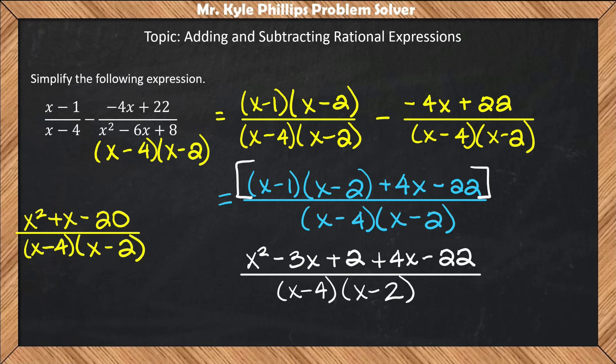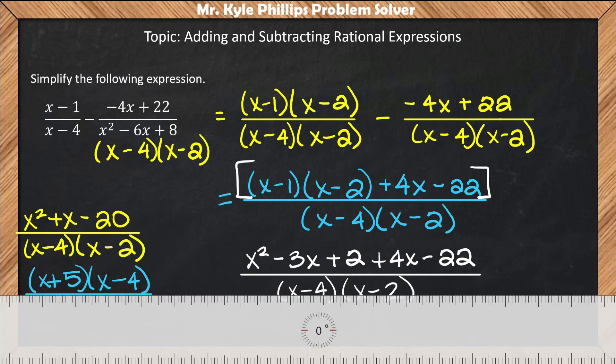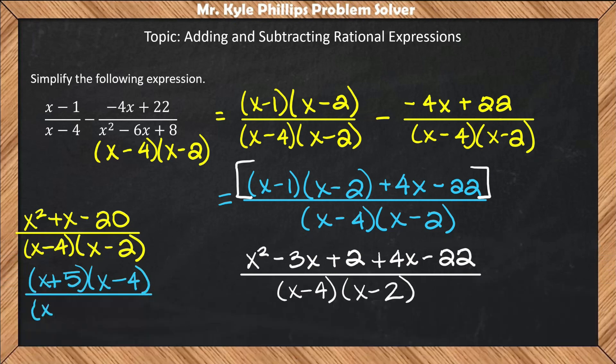Now, what we'll need to do is factor this numerator. So I'm looking for two numbers that multiply to give me negative 20, and when I combine them, I get positive 1. And that's going to be positive 5 and negative 4. So here I can say x plus 5, x minus 4. And this will all be over x minus 4, x minus 2.